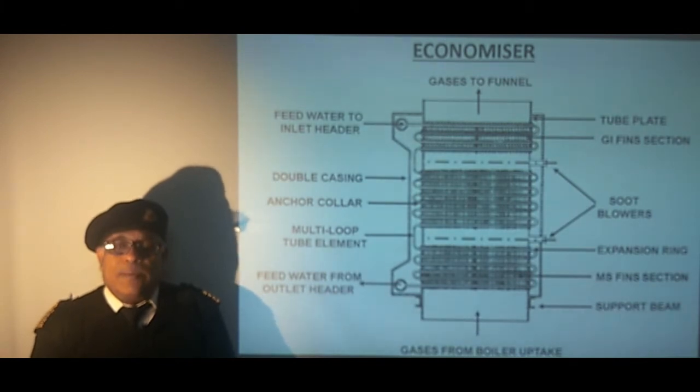Inlet header. Multi loop tube elements are fixed on one side with the anchor collar whereas other end is equipped with expansion ring which provides necessary expansion allowance. Inlet header is equipped with a vent to release air and outlet header with a drain to empty out the economizer. So this is a brief description of economizer.